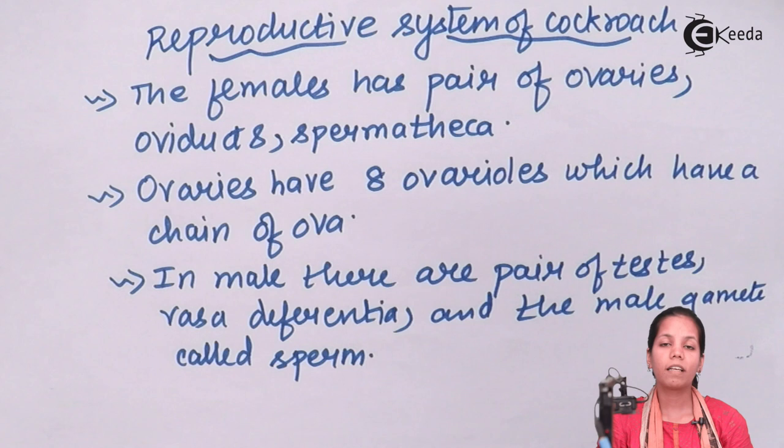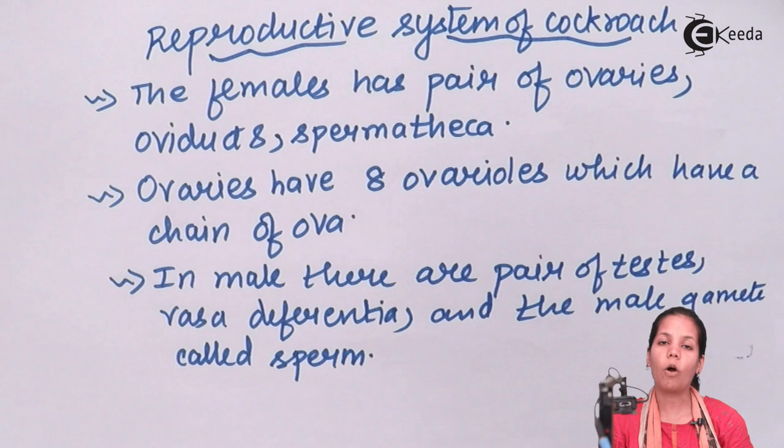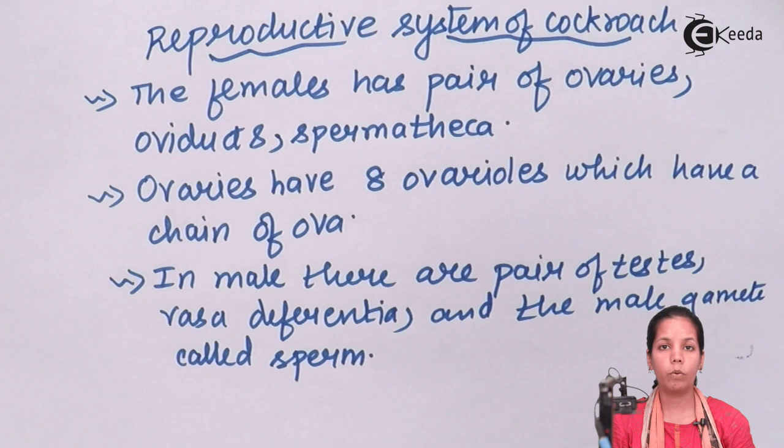Cockroaches are not like earthworms. Earthworms are hermaphrodite — they have both the sexes, male and female, inside their own body. Whereas cockroaches show sexual dimorphism, meaning there is a male cockroach population and a female cockroach population. The female cockroach population produces female gametes, whereas the male cockroach population produces male gametes.